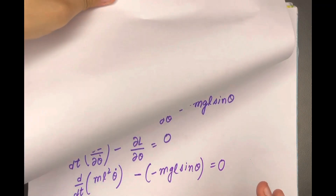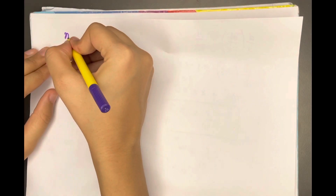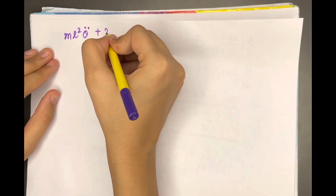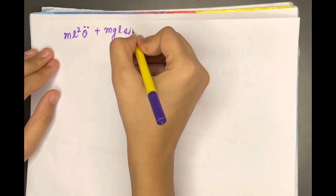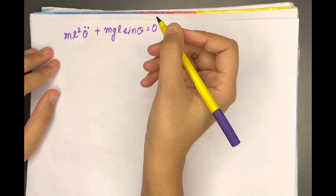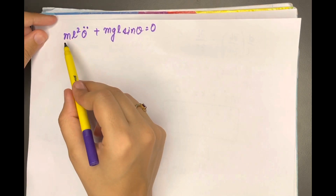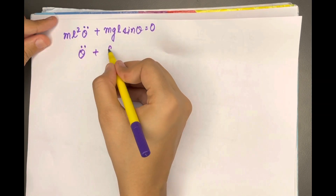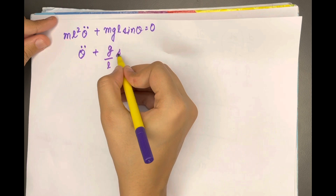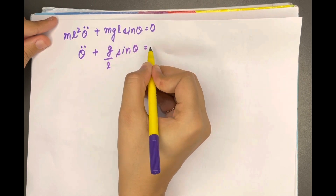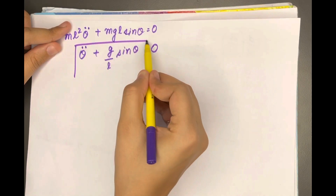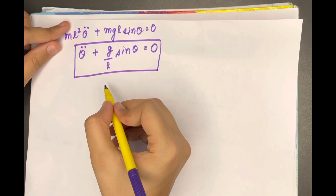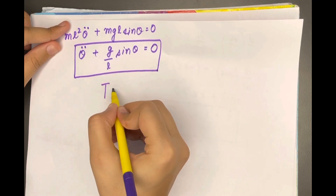This gives ml²θ̈ plus mgl·sinθ equals zero. Dividing through by ml², we obtain θ̈ plus (g/l)·sinθ equals zero. This is the equation of motion for the simple pendulum.